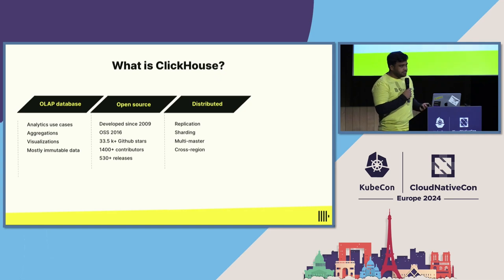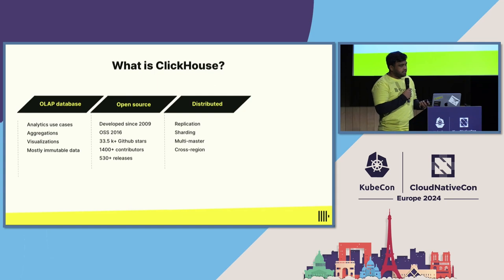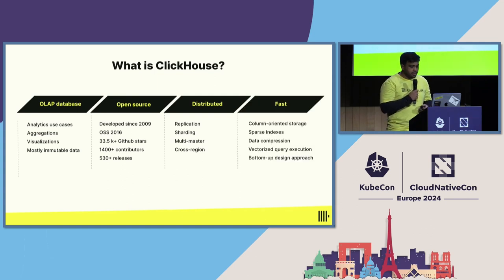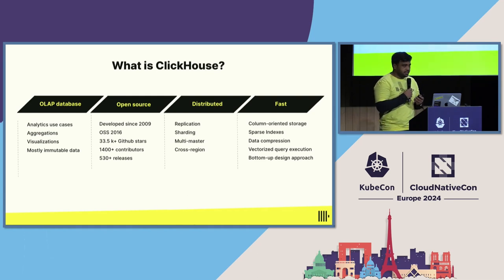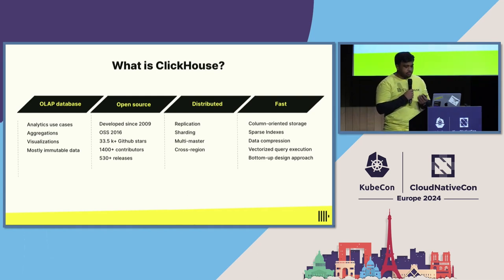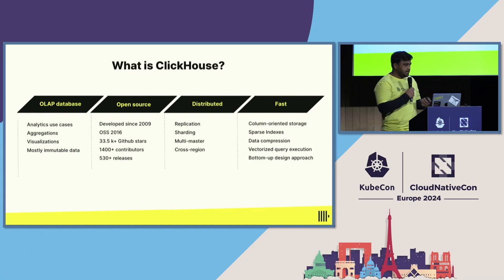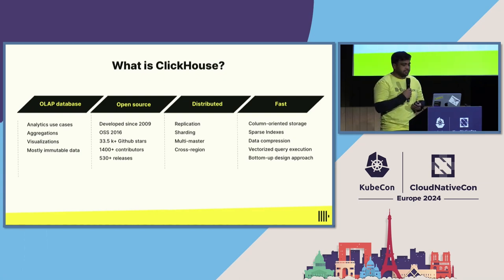ClickHouse is a fully distributed database. It supports replication, sharding, multi-master and cross-region setup, so it is production ready. Most importantly, ClickHouse is extremely fast. Using various techniques such as column-oriented storage and state-of-the-art data compression, ClickHouse provides insights into customer data in milliseconds, making it one of the fastest databases out there.